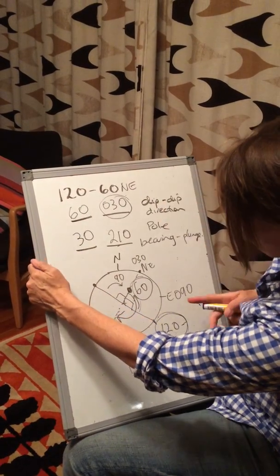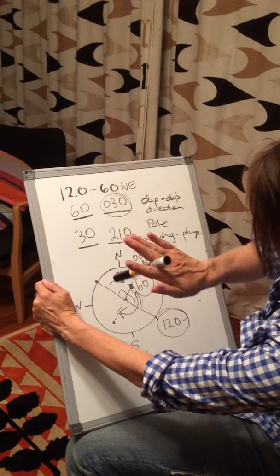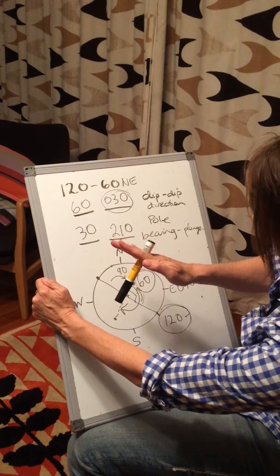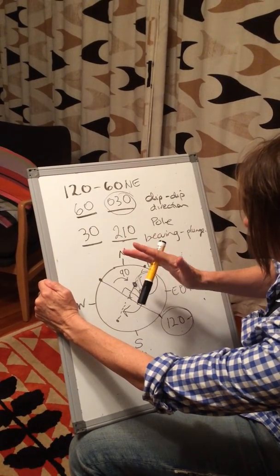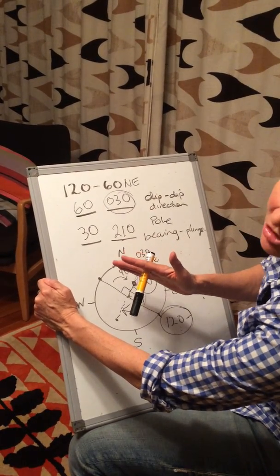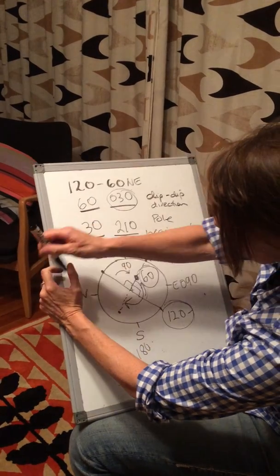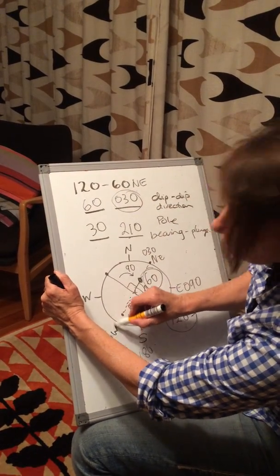It's like this. If this is my plane, my plane is dipping 60 degrees to the northeast, my pole plunges 30 degrees to the southwest. Easy.